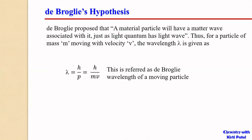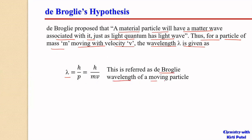De Broglie proposed that a material particle will have a matter wave associated with it, just as a light quantum has a light wave. Thus, for a particle of mass M moving with velocity V, the wavelength λ is given as λ = h/P = h/(mV), where M is the mass and V is the velocity. This is referred to as the de Broglie wavelength of a moving particle.